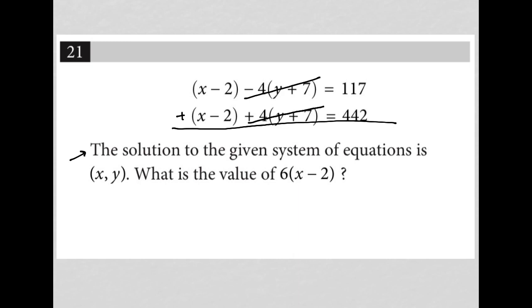I'd have x minus 2 plus x minus 2, which is just 2x minus 2, equals 117 plus 442, which is just going to be 559. So I have 2x minus 2 equals 559.